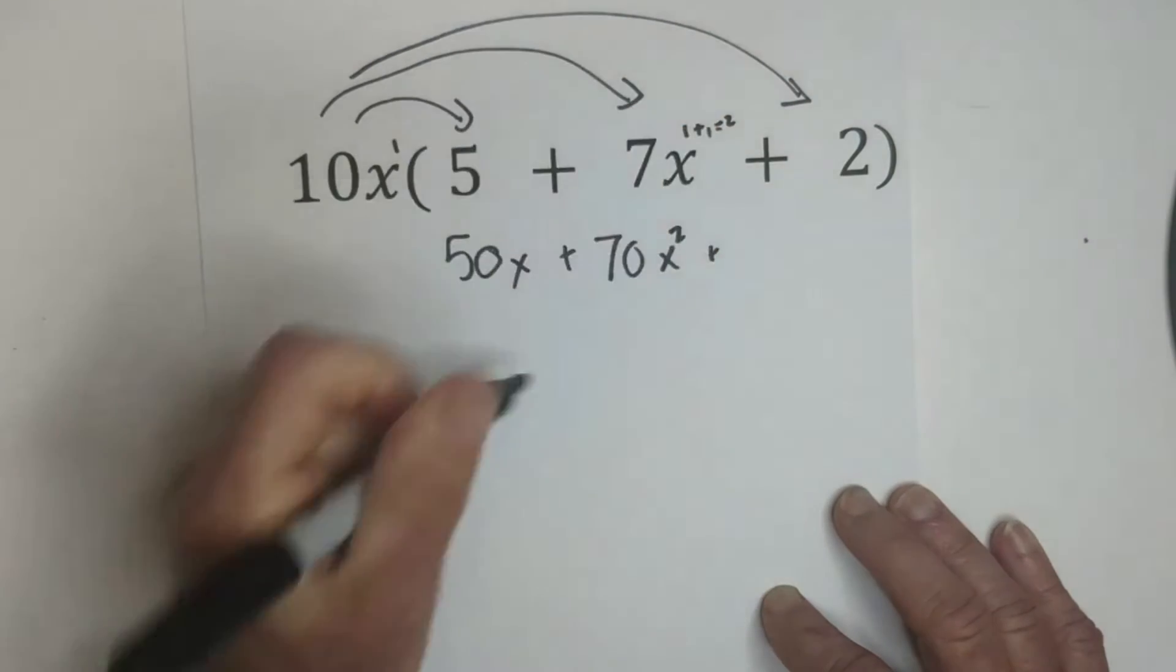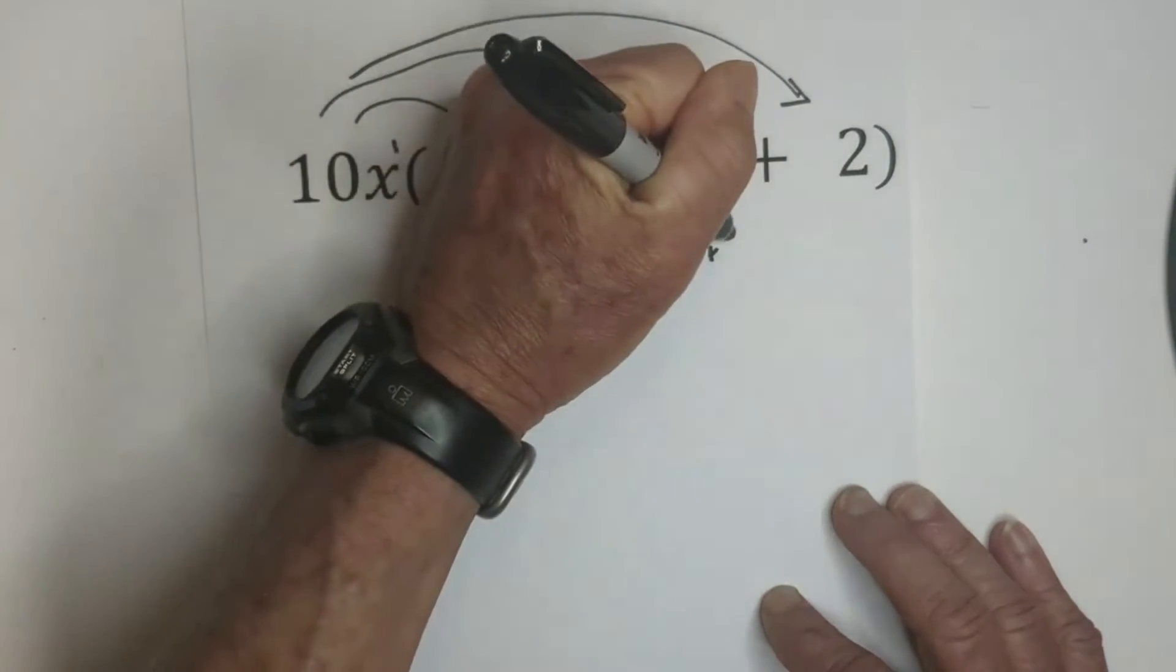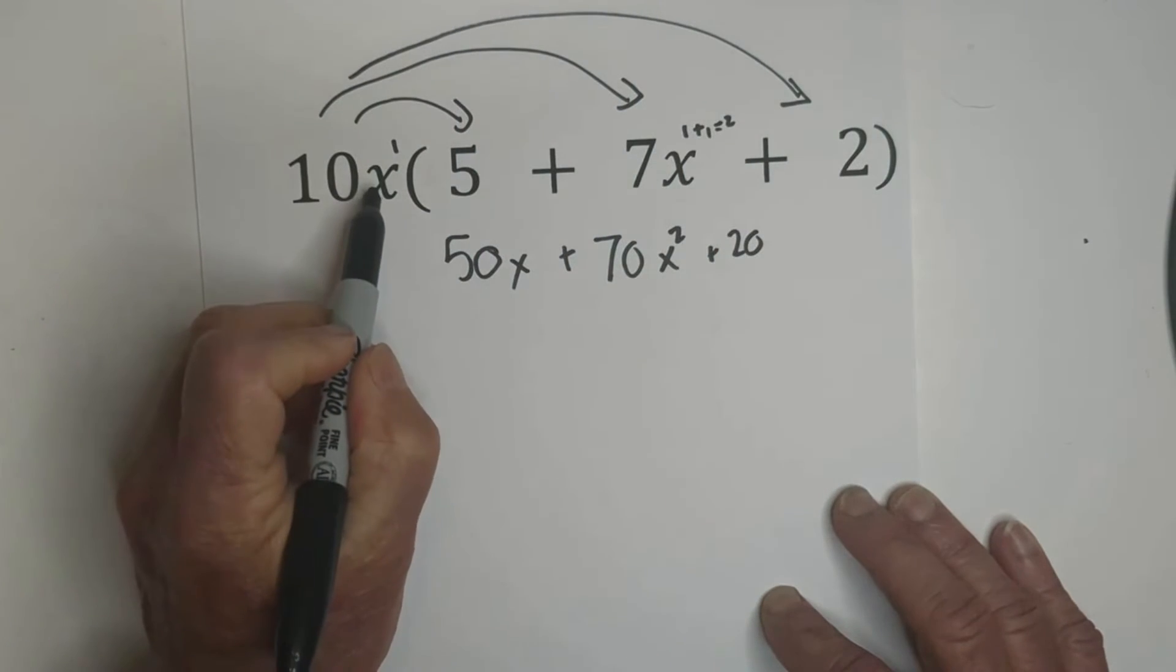And then we're going to go 10 times 2, which is 20. And then we have an x.